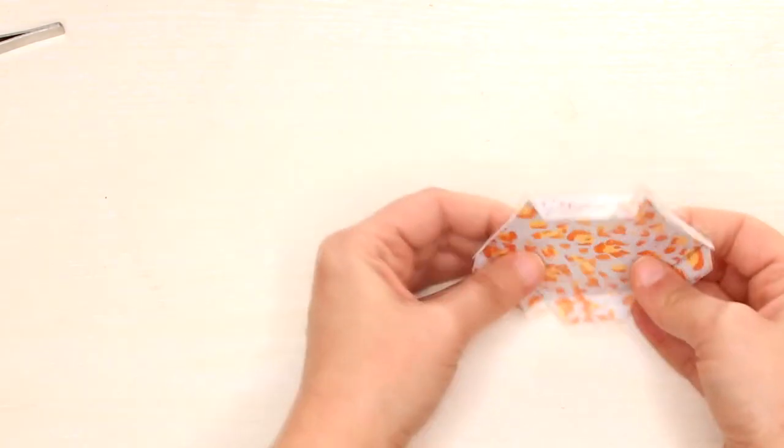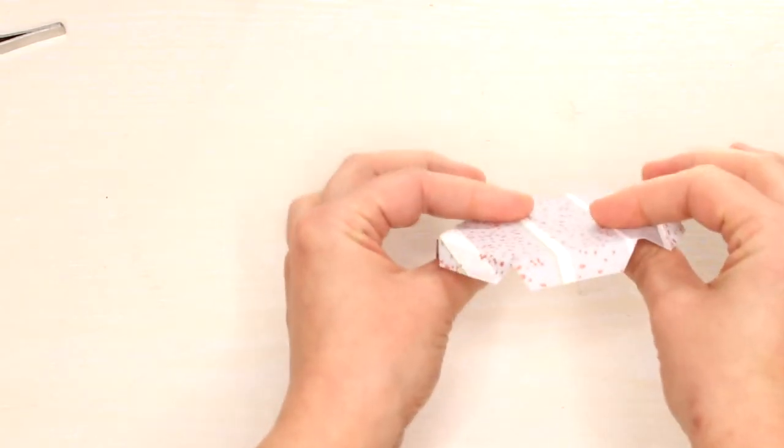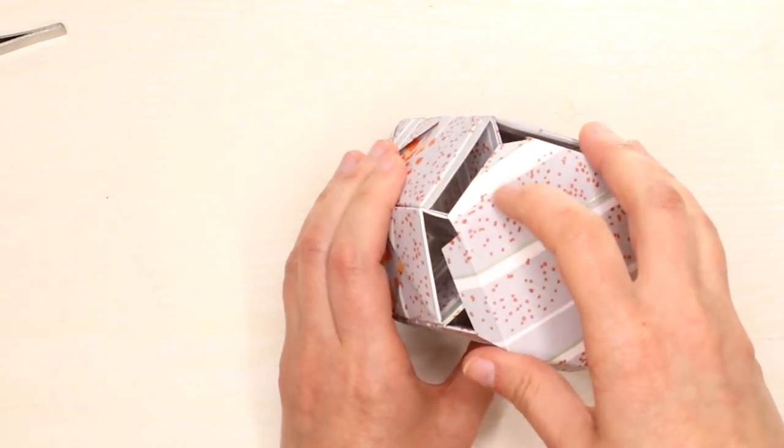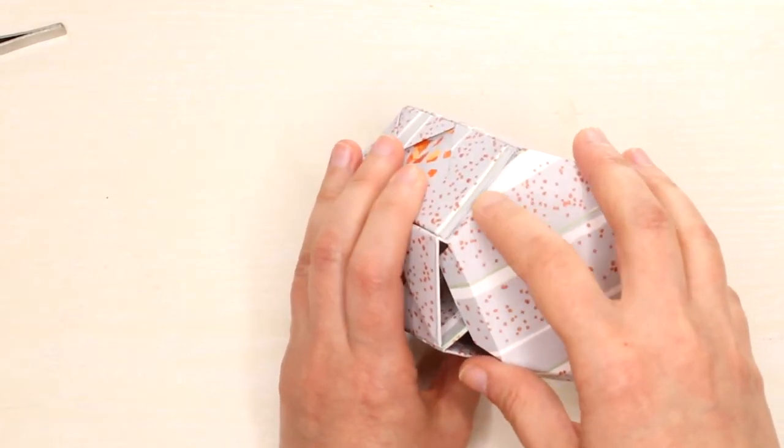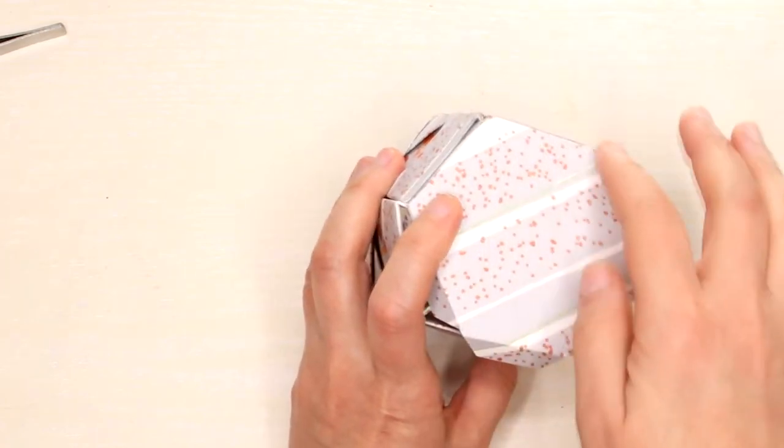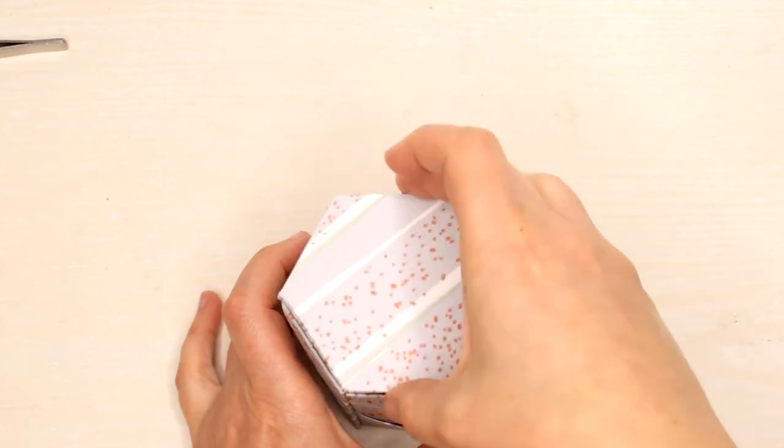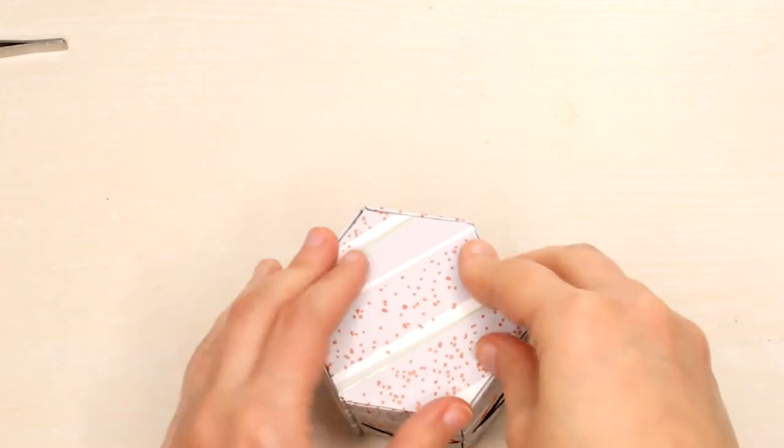This is the base of your pen holder and you will need to glue it to the bottom of the pen holder. If it doesn't fit perfectly you can always adjust it by making the notches a bit longer.